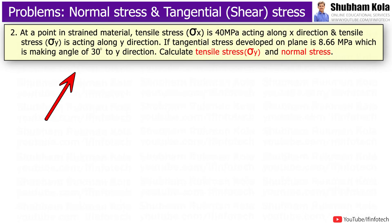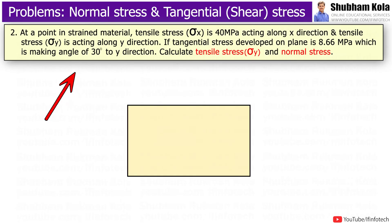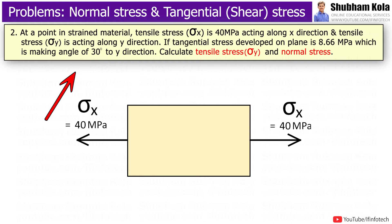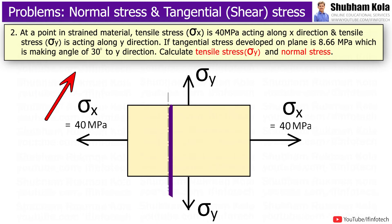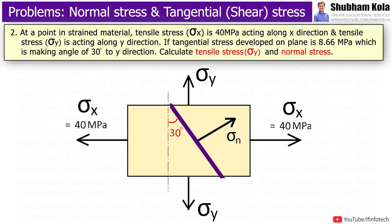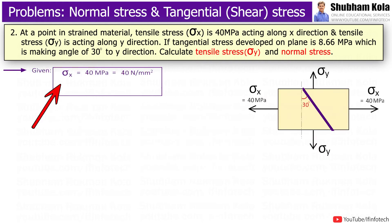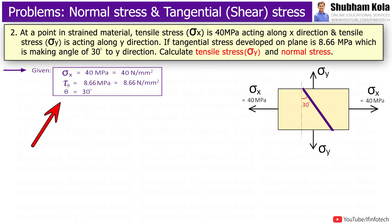For the next problem, the statement is: at a point in a strained material, tensile stress sigma_x is 40 MPa acting along the x direction and tensile stress sigma_y is acting along the y direction. If tangential stress developed on the plane is 8.66 MPa, which makes an angle of 30 degrees to the y direction, calculate tensile stress sigma_y and normal stress. Given: sigma_x = 40 N/m² and tangential stress on the 30-degree inclined plane is 8.66 N/m².